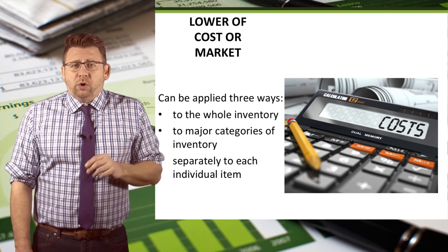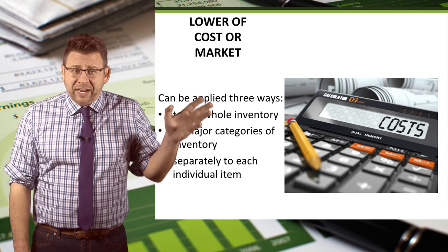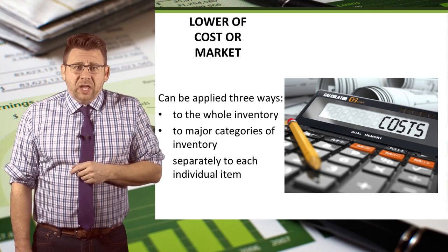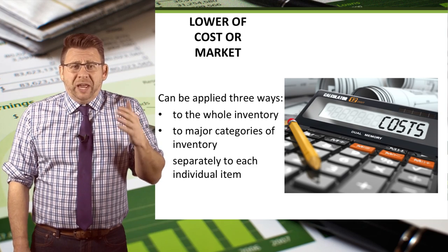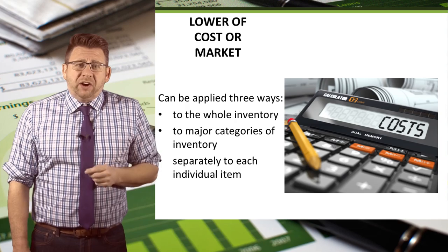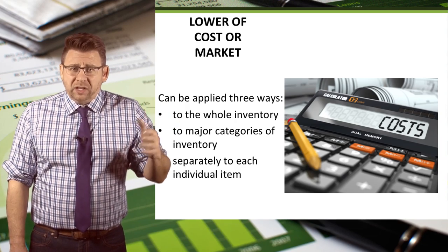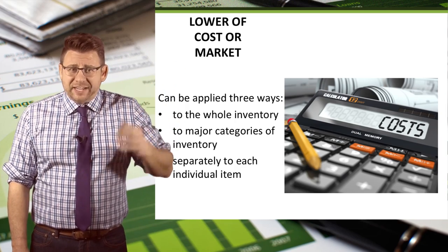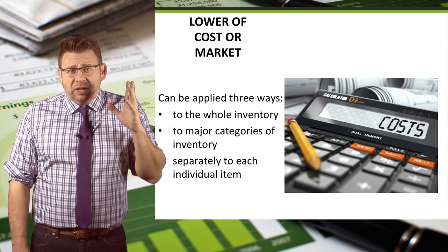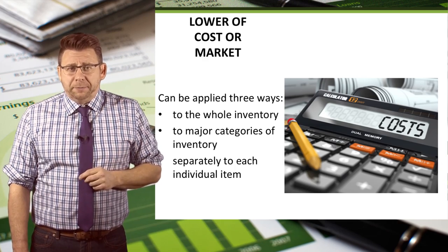Finally, the lower of cost or market rule can be applied to the entire inventory, as in these examples. It can also be applied to major inventory categories. When I worked in the dairy business, we applied this rule to categories like fluid milk, ice cream, yogurt, etc. And finally, it can be applied separately to each individual inventory item.